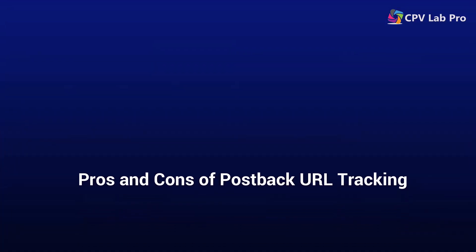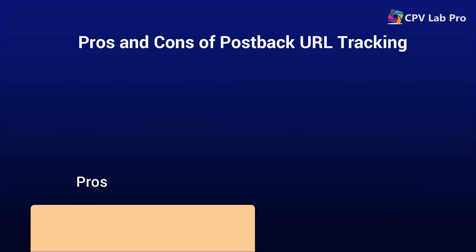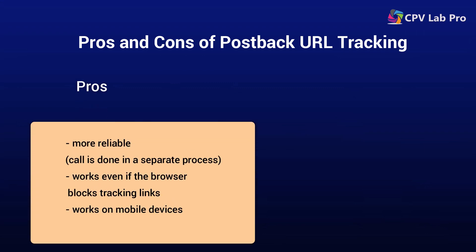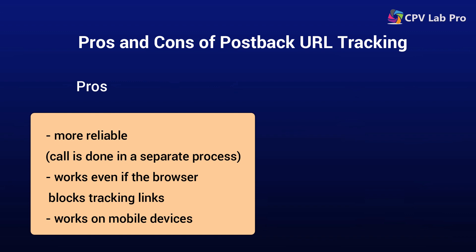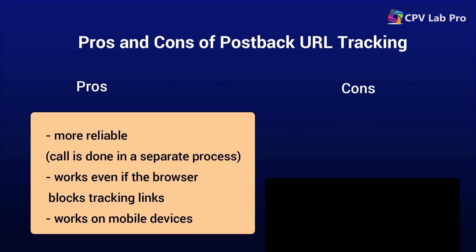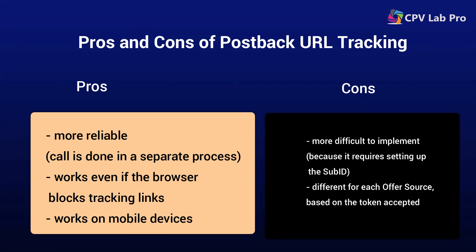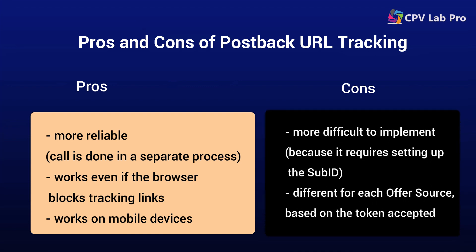The main advantage of postback URL tracking is that it is more reliable because the postback URL call is done in a separate process and not directly in the visitor's browser. It works even if the browser blocks tracking links and it works on mobile devices as well. The disadvantages are that it is more difficult to implement because it requires setting up the SubID using the token accepted by each offer source, and the postback URL will change from one offer source to another based on the token each of them accepts.